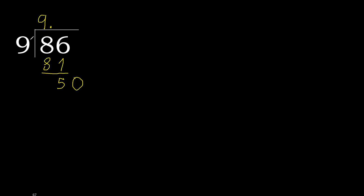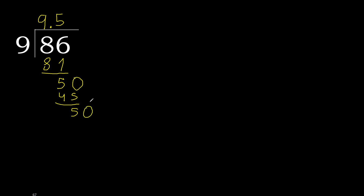50: 9 multiplied by 6 is greater, so multiply by 5. 9 multiplied by 5 equals 45, which is not greater. Subtract: 50 minus 45 equals 5. Next, there is no number, so complete with 0. Ok, we now have 50 again.